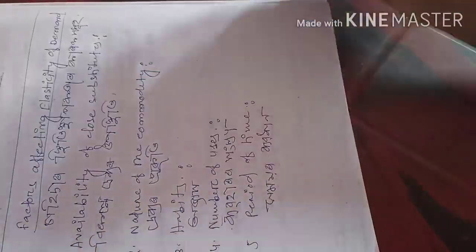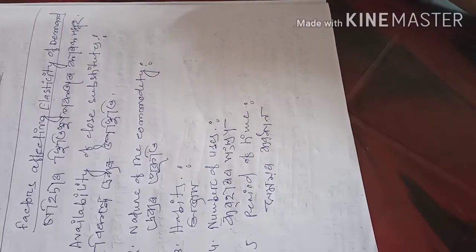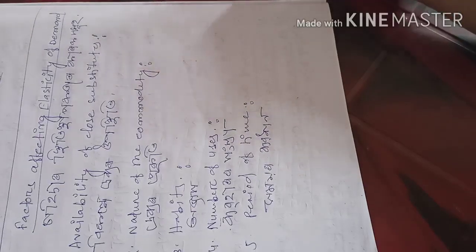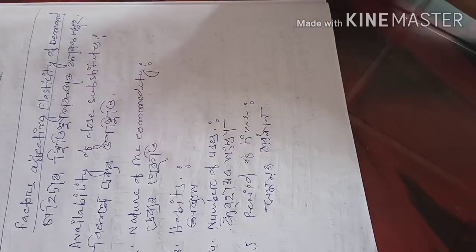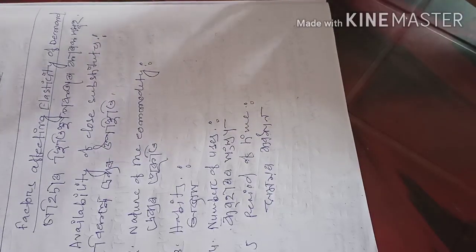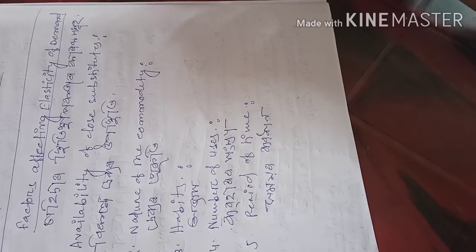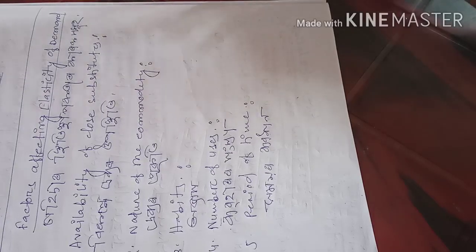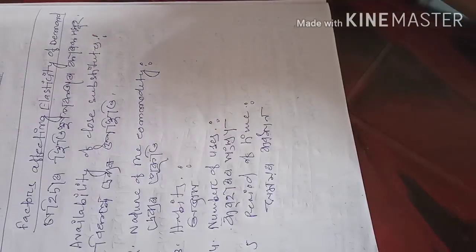The third factor is habit. Habit also determines the elasticity of demand. For example, if a person has built a habit of smoking, then whatever the price of that tobacco product, they will still consume it — so the elasticity will be less. In the case of habit-forming products, the elasticity of a commodity will be less.